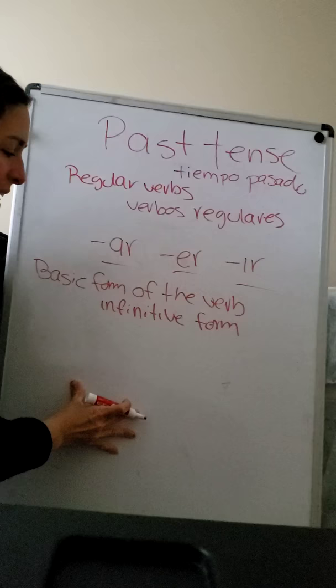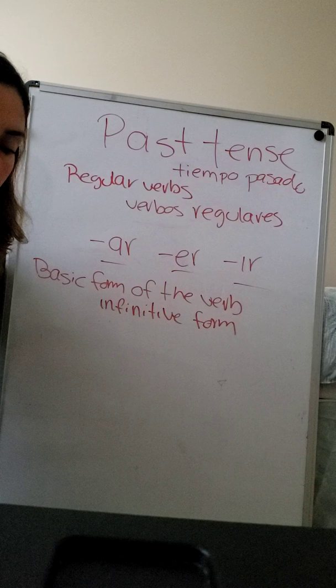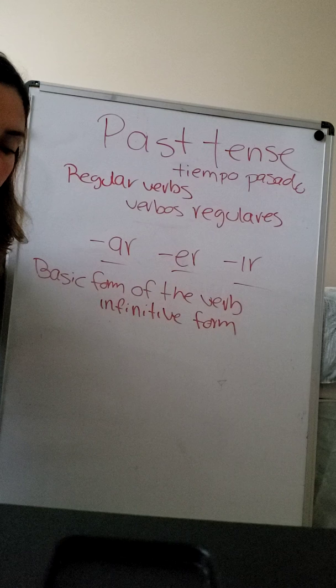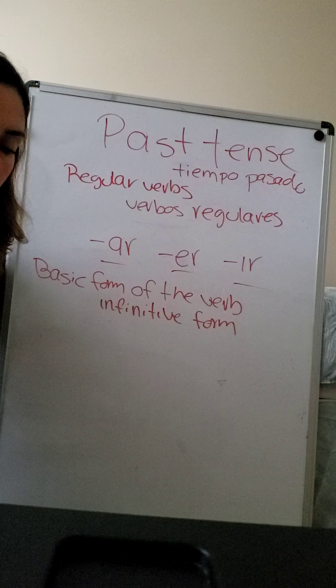So now, for conjugation, you have to take the stem of the verb — drop the ending — and add the new conjugation form. Let me give you an example.